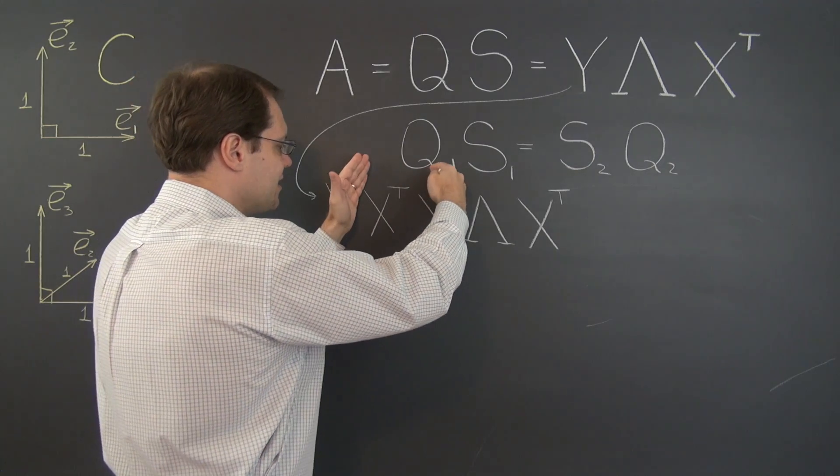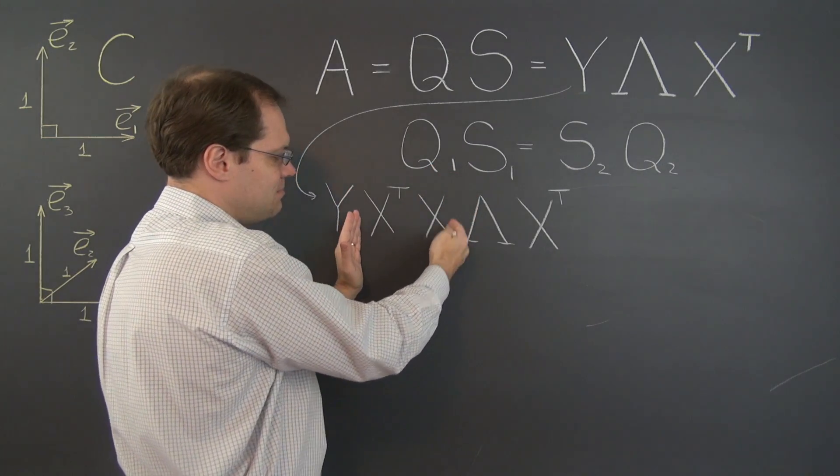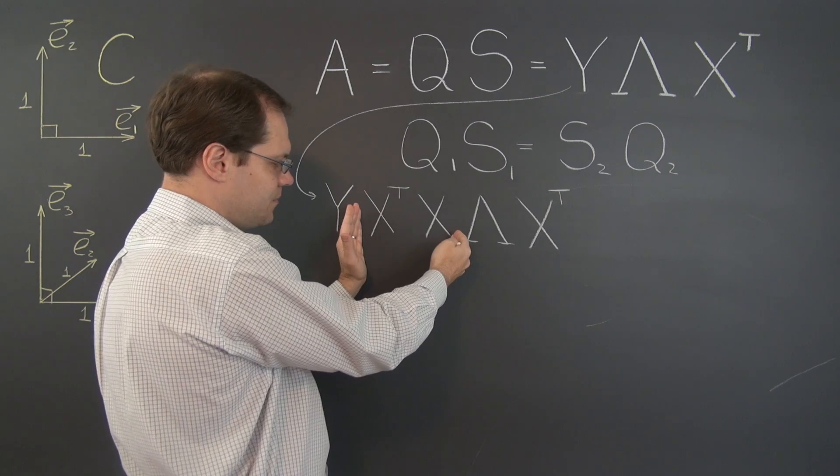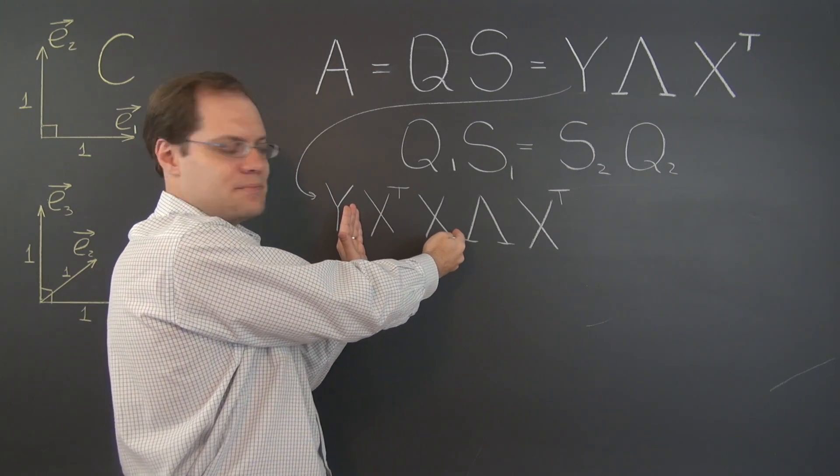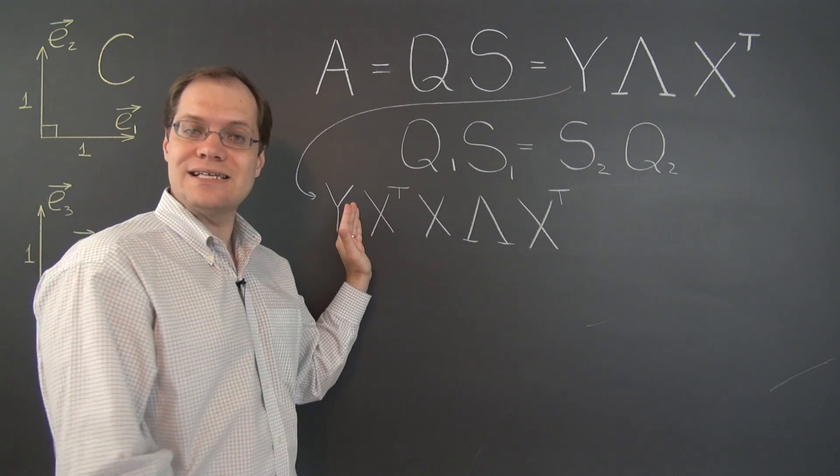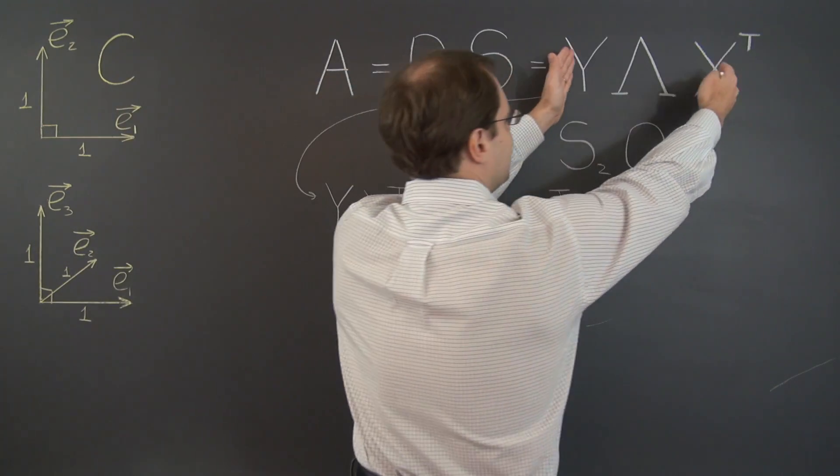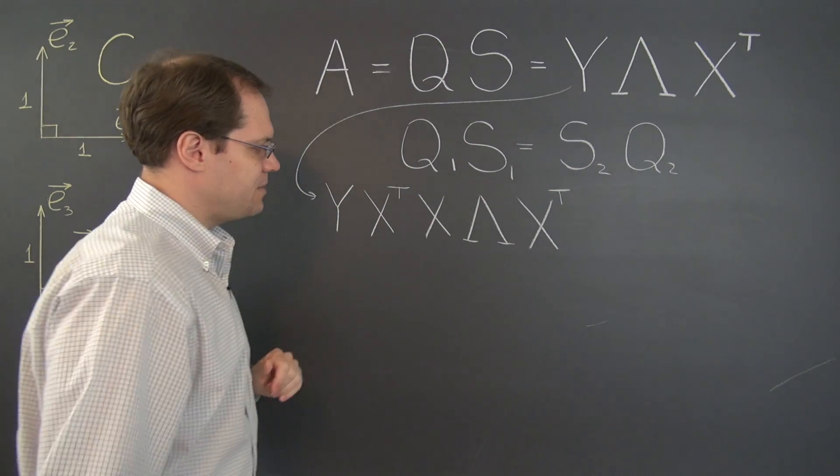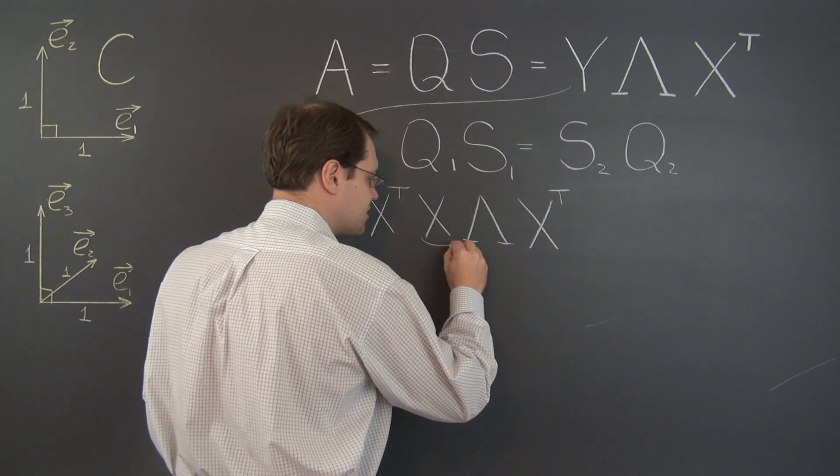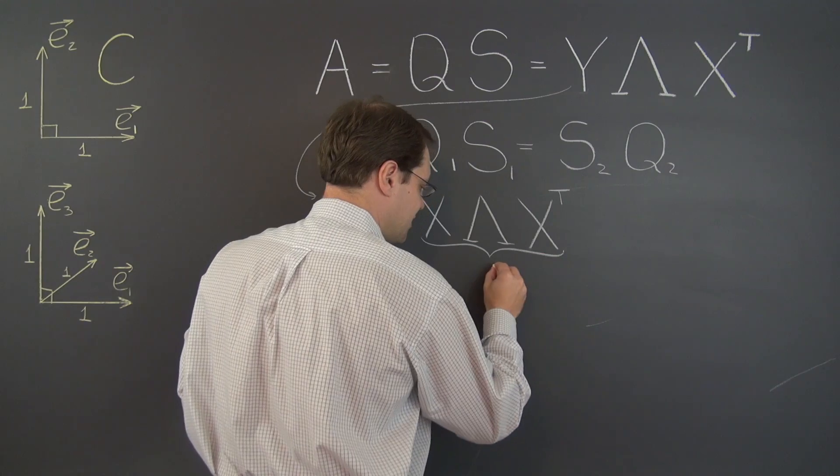Another way of looking at it is sticking the identity matrix right in the middle here and simply writing the identity matrix as X transpose X, because that's the inverse of X, X transpose. So in either case, this equals this, so this is still the matrix A. And then, of course, this matrix right here is S1.